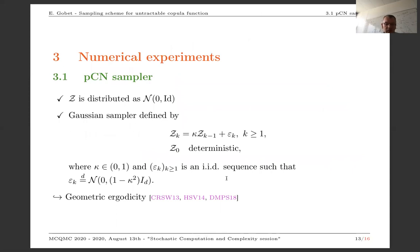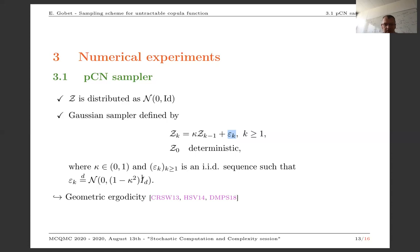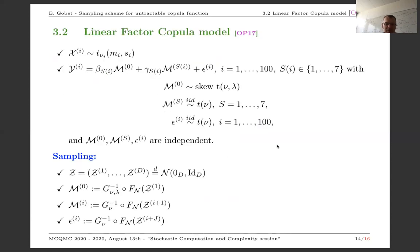For numerical experiments, in all experiments we use what we call a preconditioned Crank-Nicholson (PCN) sampler, which is well-suited for Gaussian distributions for Z. This sampler is a kind of autoregressive sampler: moving from Z_{k-1} to Z_k by applying a factor kappa to the previous component and adding independent noise epsilon, where epsilon is an i.i.d. sequence with the right Gaussian distribution. This ensures the distribution of Z_k is essentially N(0, I), and this is a geometrically ergodic sampler — a well-known fact. We apply this to the linear factor copula model from Oh-Patton.